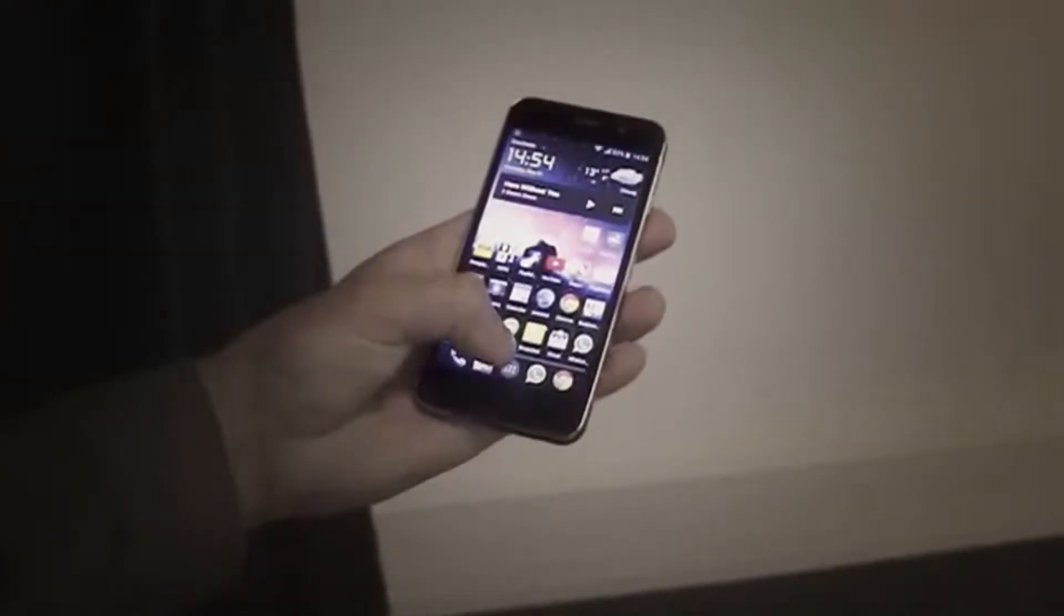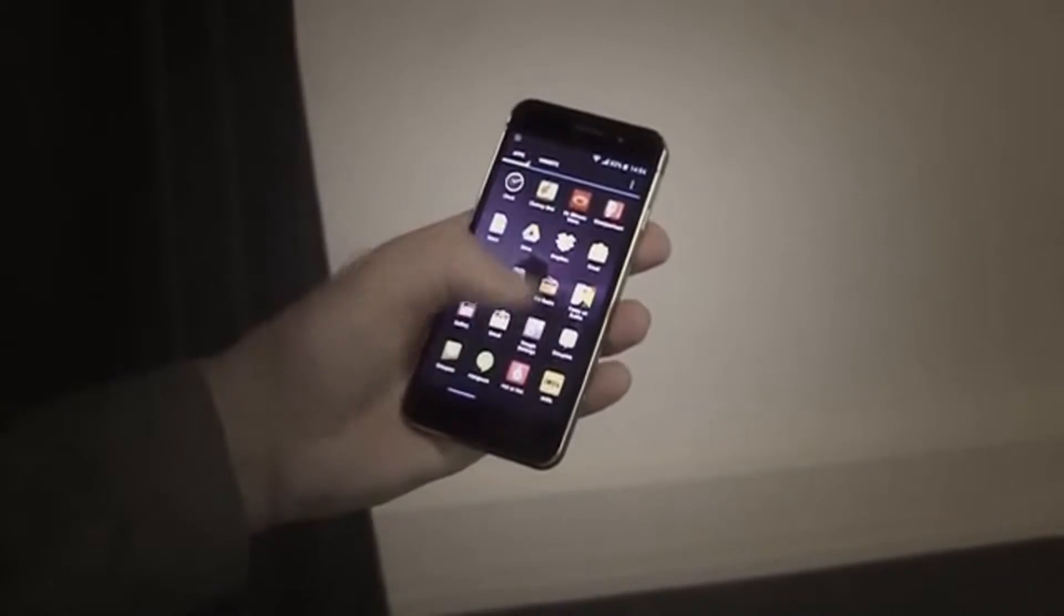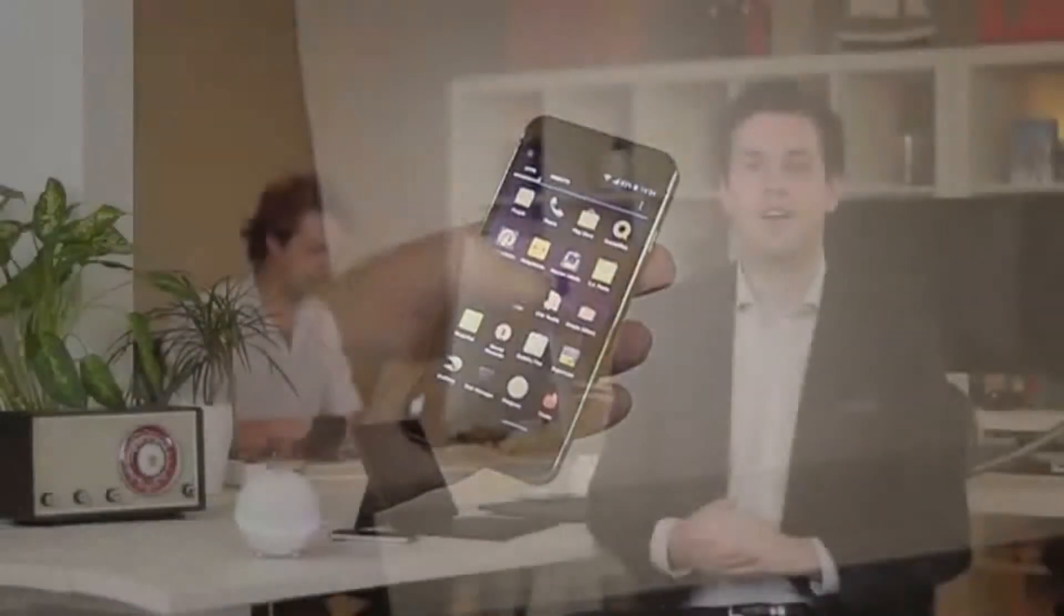Currently, home automation is often done via apps, which just isn't ideal. Switching on a light takes even longer than before. We want to create a real intelligent home with natural and swift interaction. And what is more natural than speech?